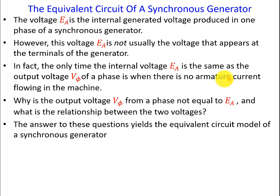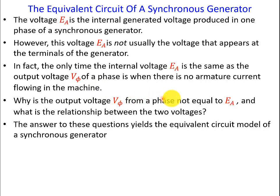No armature current flows in the machine when we have no load connected to the generator. So why is the output voltage V_phase not equal to EA, and what is the relationship between the two voltages? We have to answer this question.